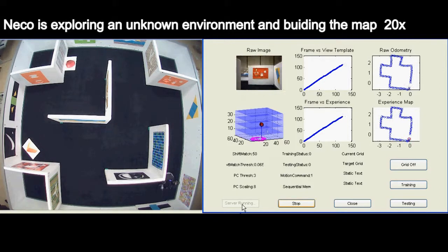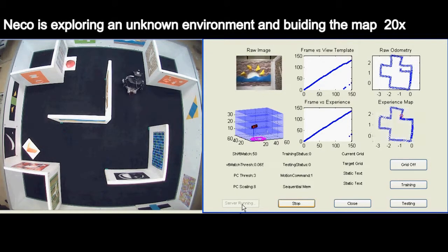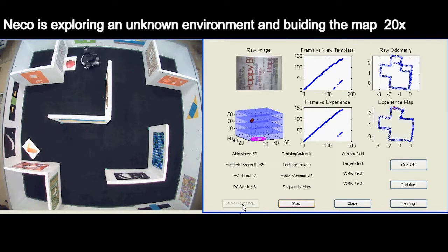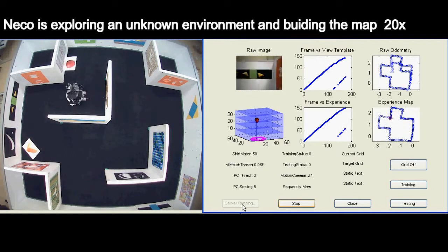Entorhinal cortex is the part of the brain in charge of map encoding. Now we are showing the robot mapping and localization ability developed from the entorhinal cortex model.